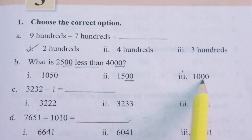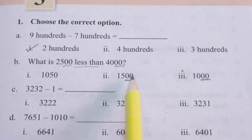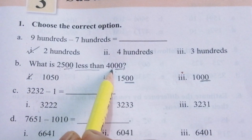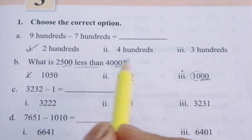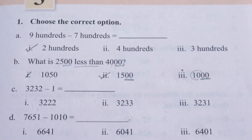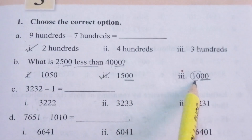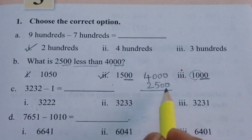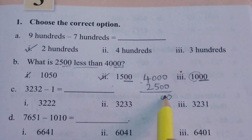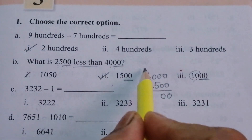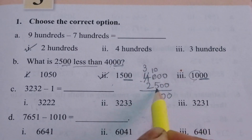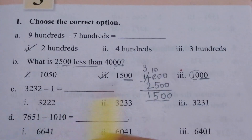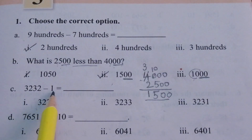Since the last two digits are double zero, some options are eliminated. If we subtract twenty-five from forty we should not get ten, so the answer is 1500. Using the traditional method: zero minus zero is zero, zero minus zero is zero, we cannot subtract five from zero so we borrow — ten minus five is five, and three minus two is one — giving one thousand five hundred. C: Three thousand two hundred thirty-two minus one — minus one means its predecessor, which is three thousand two hundred thirty-one.